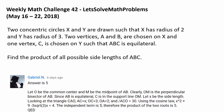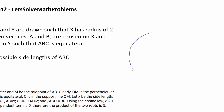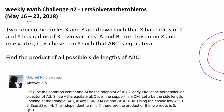We have two concentric circles X and Y, with X having radius 2 and Y having radius 3. So we have circle Y with radius 3, and inside we have circle X with radius 2. They share a common center because they are concentric.